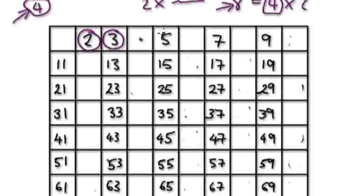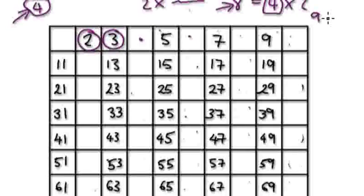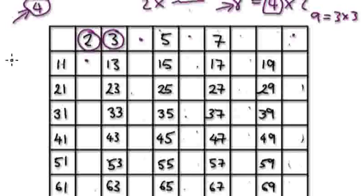So the next prime would be 3. Now if 3 is a prime, then 6 is already gone because you can visualize it as 3 times 2. And 9 — you can visualize 9 as 3 times 3, so 9 is not a prime. That can go. And 12 is already gone, but you can visualize 12 as 4 times 3.